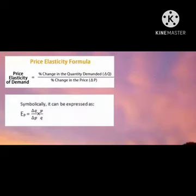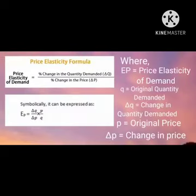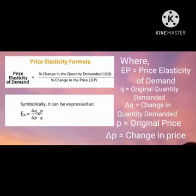This is the formula for Price Elasticity of Demand. Price Elasticity of Demand equals percentage change in quantity demanded over percentage change in price. Symbolically, it can be expressed as Price Elasticity of Demand equals change in quantity demanded over change in price, times original price over original quantity demanded.